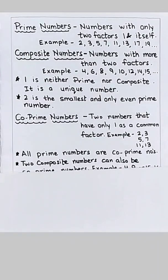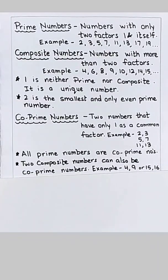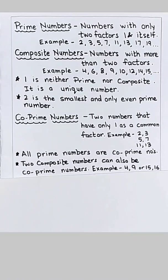Two composite numbers can also be co-prime numbers. For example 4 and 9, they have only one as common factor. 15 and 16, they also have only one as common factor.